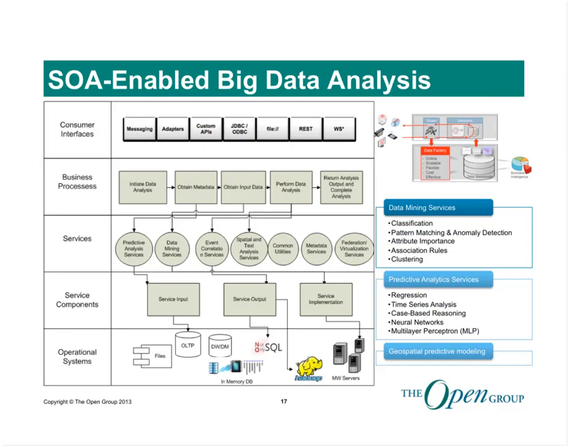Moving on to analytics as a service: event correlation services are getting more mainstream for use cases including smart grid, fraud detection, healthcare, cybersecurity, intelligence, financial services, and public safety. Other categories of analysis services include data mining, predictive analytics, and spatial and text analytics. Typical data mining services expose algorithms to perform classification, pattern matching, anomaly detection, attribute importance, prediction and determination, association rules, and clustering. On the predictive analytics side, regression is one of the most common forms; others include time series analysis, case-based reasoning, neural networks, and multi-layer perceptron.